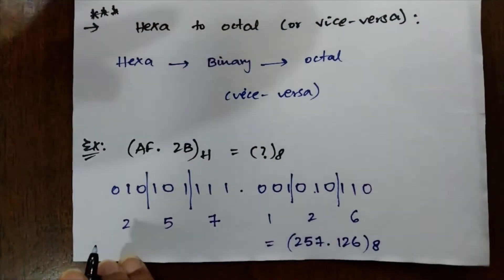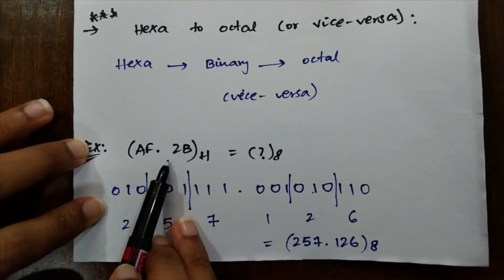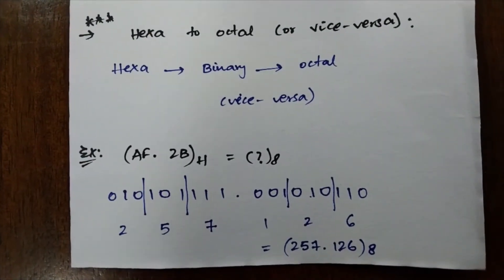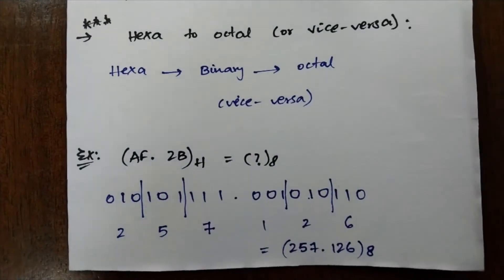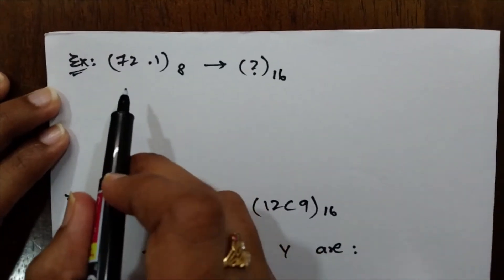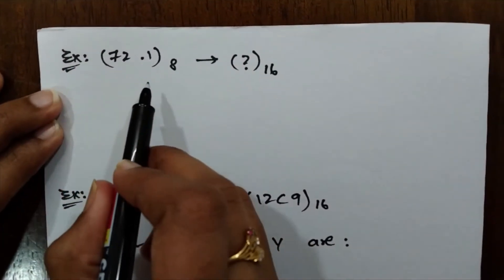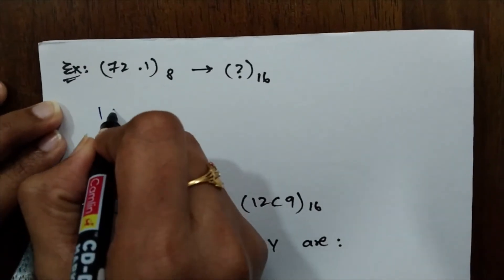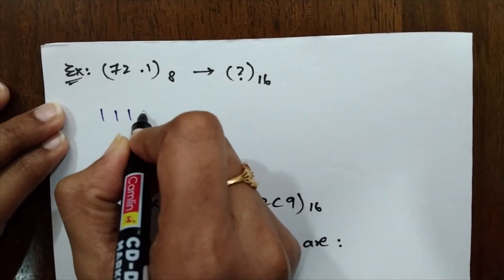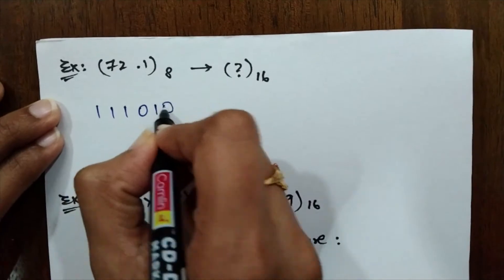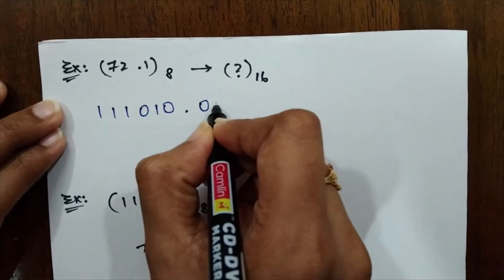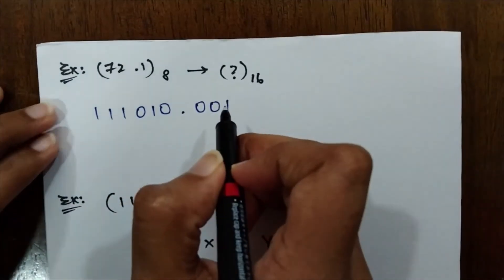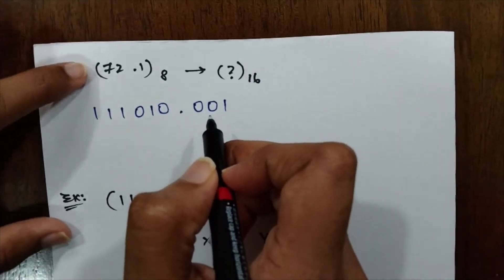We have successfully converted the hexadecimal number into octal. Now let's see another example where we convert octal to hexadecimal. Try converting 72.1 in octal. 7 is represented using 111 and 2 is represented using 010, dot, 1 is represented using 001. We have successfully converted the octal number into its binary form.